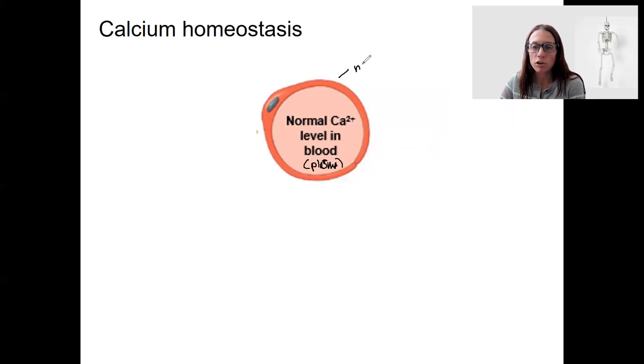It's important for neurotransmitter release, actually vesicle release in general, but we'll see it with neurotransmitter release in synaptic transmission, muscle contractions, and also cell signaling. Calcium can actually be a second messenger in the cell, and we will see that at some point.